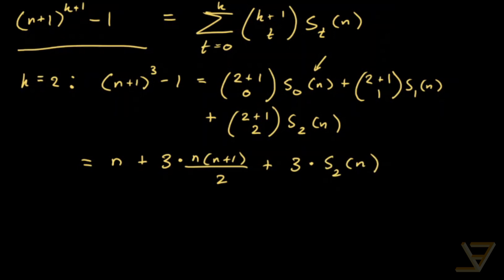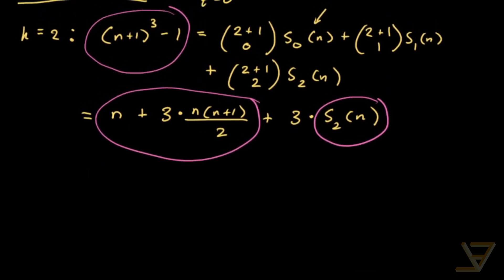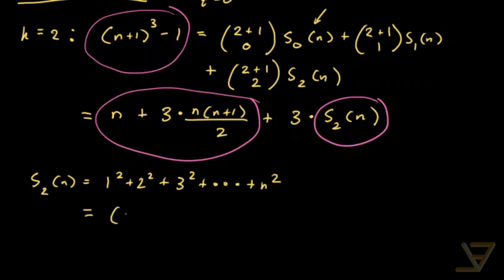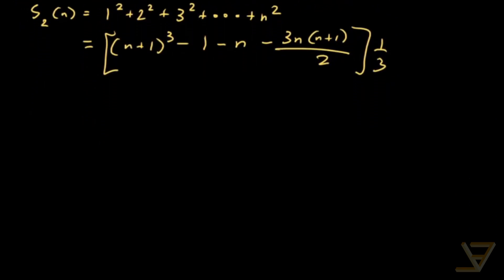We have (n+1) cubed minus 1 on the left side and those terms on the right side, and now we can isolate S(2, n). So S(2, n) — which equals 1 squared plus 2 squared plus 3 squared all the way through n squared — is equal to (n+1) cubed minus 1 minus n minus 3n(n+1)/2, all divided by 3.